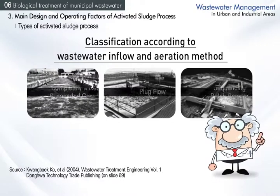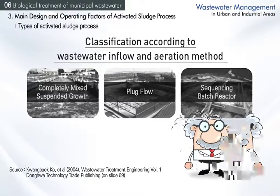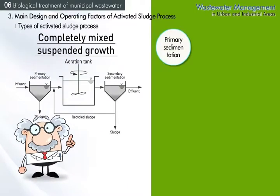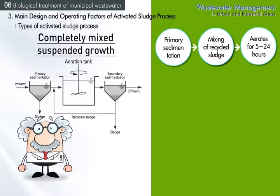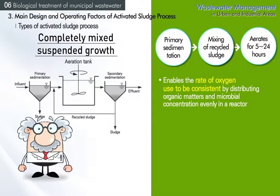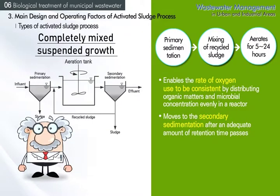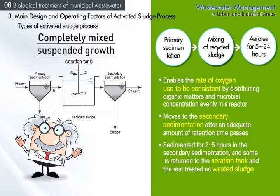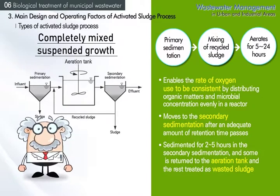Activated sludge process can be divided into completely mixed suspended growth, plug flow, and sequencing batch reactor depending on wastewater inflow and aeration. In completely mixed suspended growth, wastewater after primary sedimentation is completely mixed with recycled sludge in an aeration tank, aerated for 5 to 24 hours so that concentration of organic matters and microorganisms are distributed evenly. The oxygen use rate is consistent regardless of reactor location. After adequate retention time, the mixed liquor is transferred to secondary sedimentation for 2 to 5 hours, then sedimented sludge is partly returned as recycled sludge and the rest sent to sludge treatment as wasted sludge.